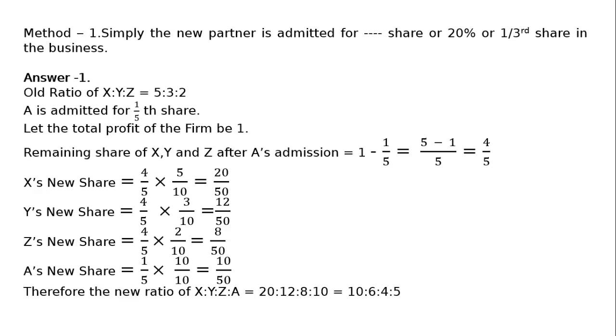You cannot say 20:12:8:10 is the ratio. A ratio is that amount which is not divisible by a common factor. Therefore, 10:6:4:5 is the final answer.